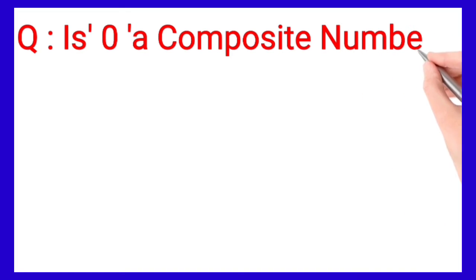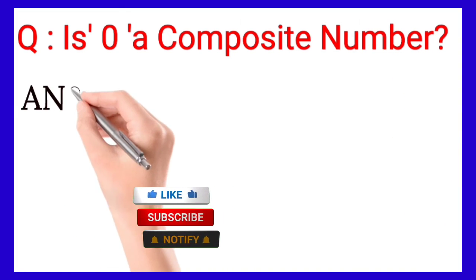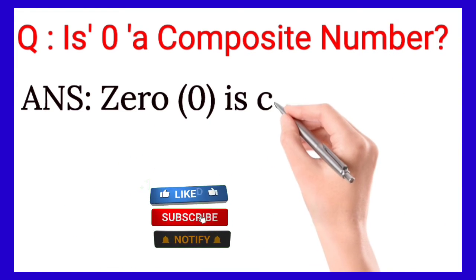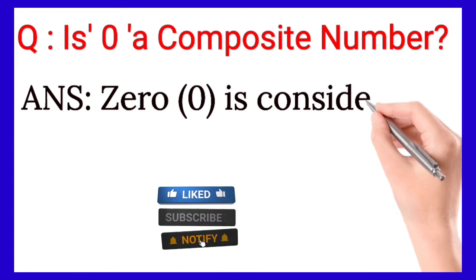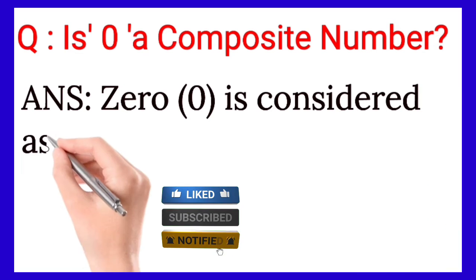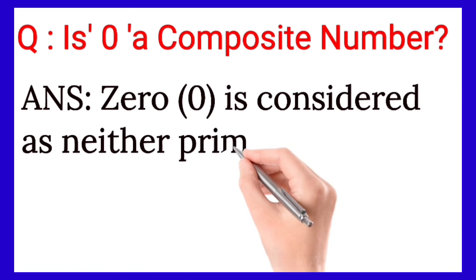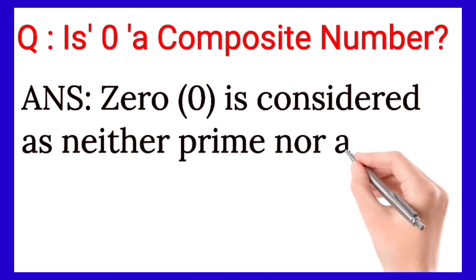Q: Is zero a composite number? Answer: Zero is considered as neither prime nor composite number, because it does not have any factors.